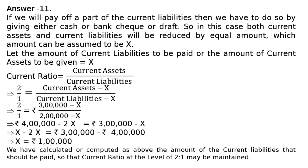We have computed the amount of current liabilities that should be paid so that the current ratio at the level of 2 is to 1 may be maintained. If we pay rupees 1 lakh, it will reduce our current assets from 3 lakh to rupees 2 lakh, and current liabilities from rupees 2 lakh will be reduced to rupees 1 lakh. Hence, 2 lakh upon 1 lakh equals 2 is to 1, which is maintained. This is the final answer.